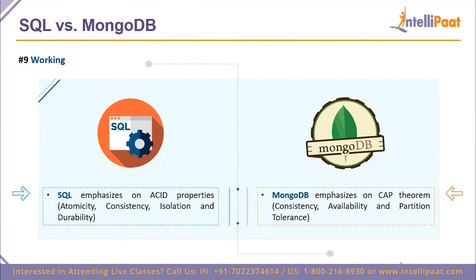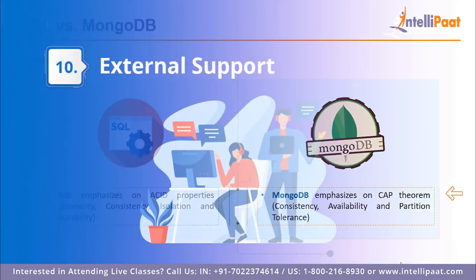Point nine is basic working. SQL emphasizes the ACID properties: Atomicity, Consistency, Isolation, and Durability. These properties ensure that the database is relevant, easy to work with, and low in redundancy. MongoDB uses the CAP theorem: Consistency, Availability, and Partition Tolerance. Both ACID for SQL and the CAP theorem for MongoDB are the driving forces behind how each database system operates, and each adds unique value to the working of the database as a whole.